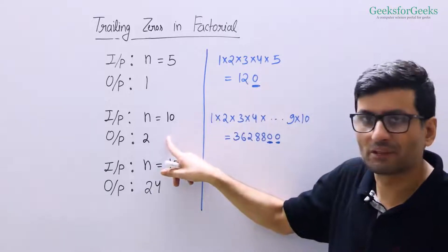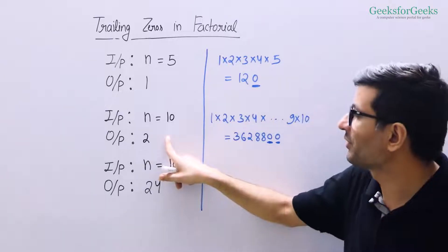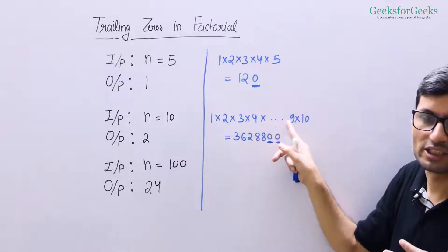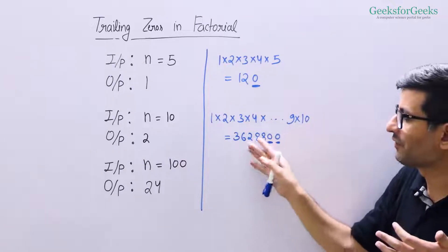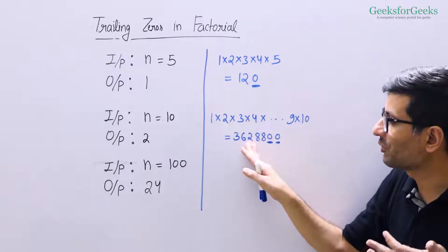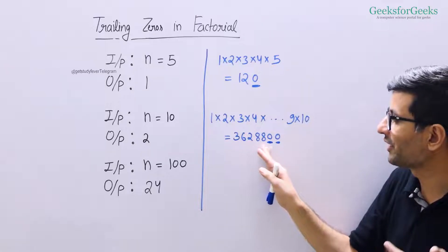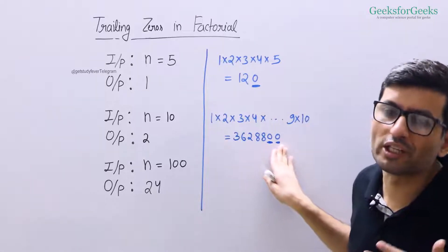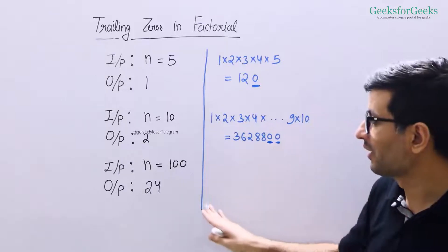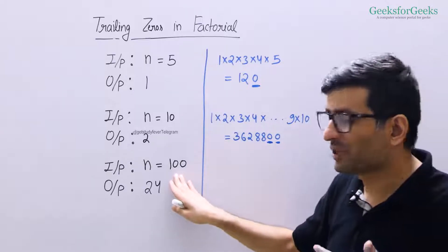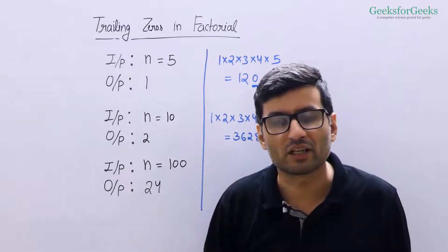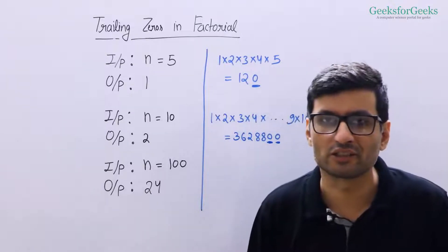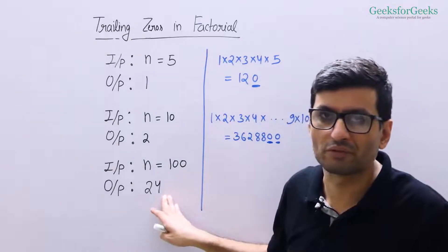Let's see another example. If n is 10 then we get 1 × 2 × 3 × 4 × 5 × 6 × 7 × 8 × 9 × 10. If we compute this value we get 3,628,800, and this number has 2 trailing zeros. If you take n equal to 100 you get a huge number with 24 trailing zeros, so the output is 24.